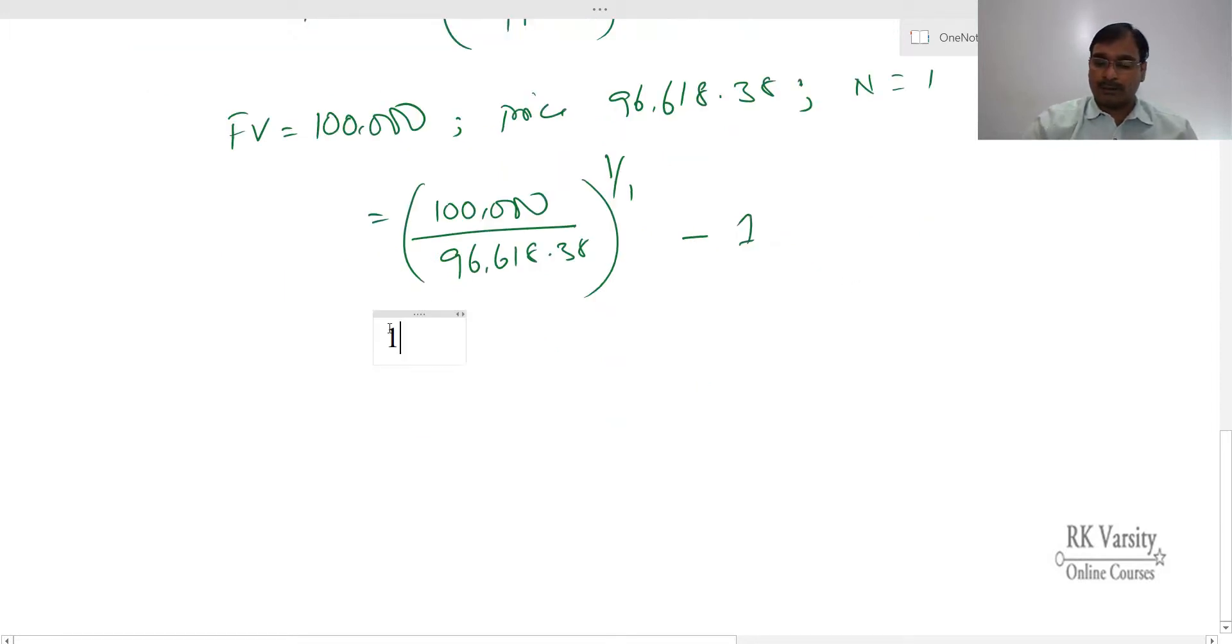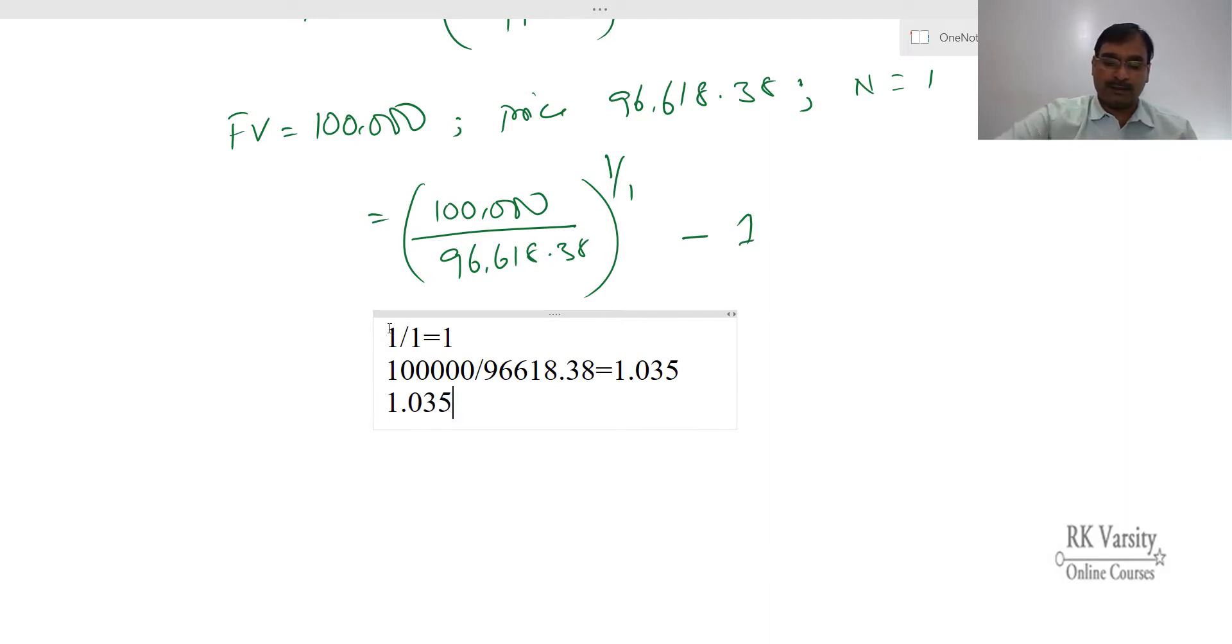Now 1 upon 1 is 1. Then 100,000 upon 96,618.38. So 1.035 raised to the power of 1 - you will get the same value. Then 1.035 minus 1 equals 0.035. If you convert it into percentage, that is 0.035 times 100, so 3.5% is the yield to maturity.